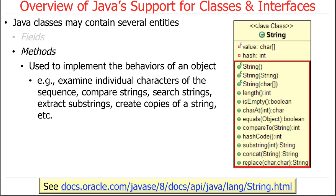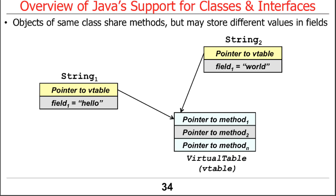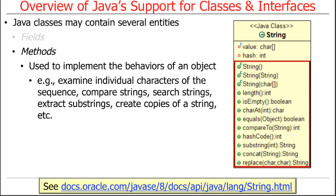Objects of the same class share methods but can have different values. You may have different strings like 'hello' and 'world' — an instance with one value differs from an instance with another, even though they both have the same named fields. Under the hood, the field storing the character data might be called something like 'value.'